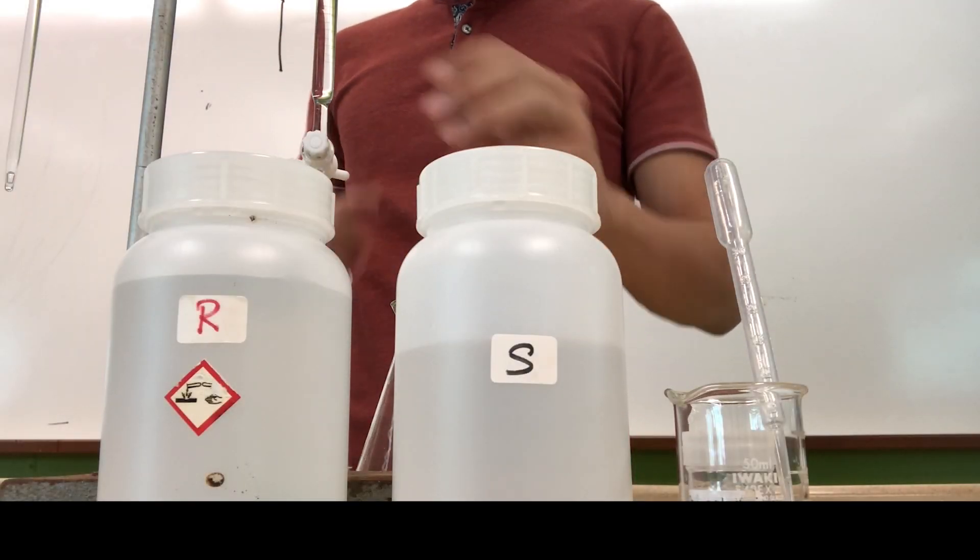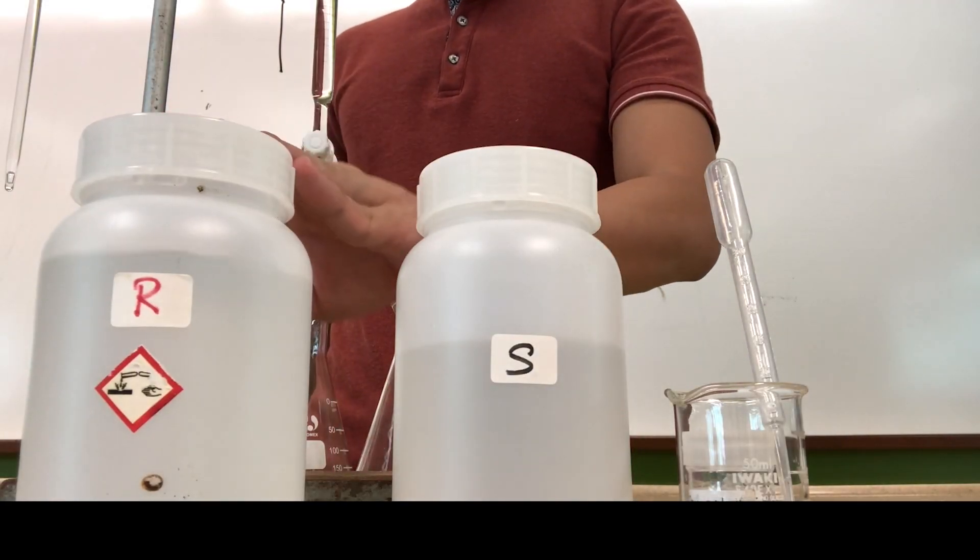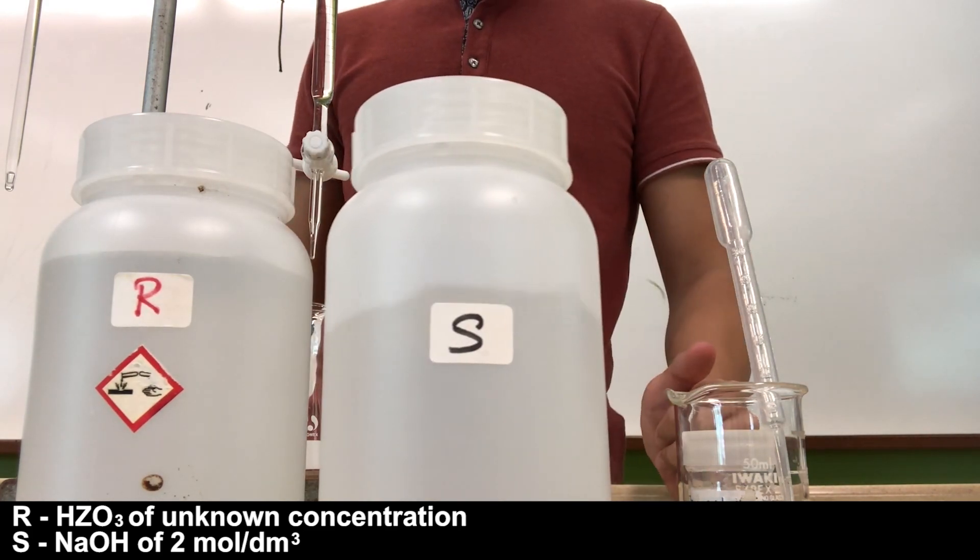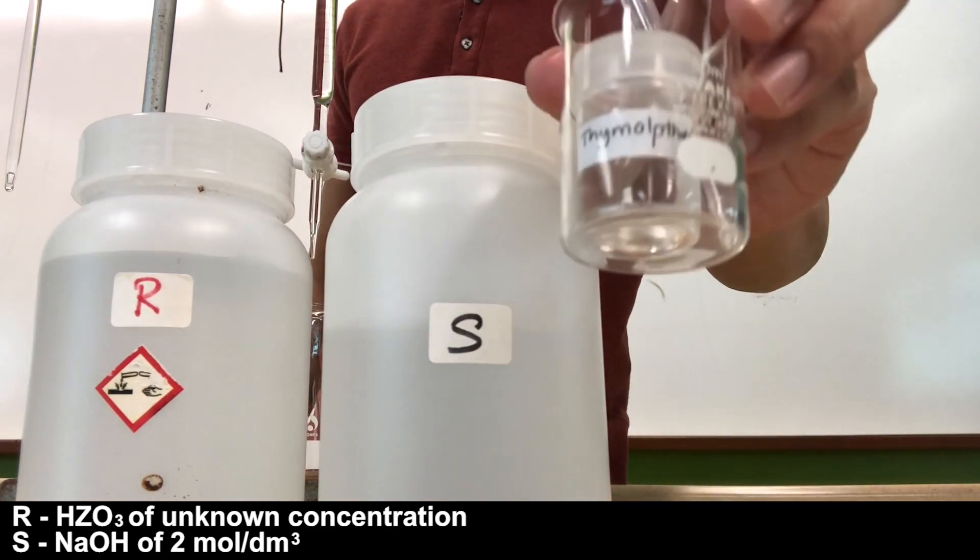Hi everyone, in this video we are going to take a look at titration. So over here I have two chemicals, R is an acid and S is an alkaline. And today we are going to use this indicator called thymolphthalein.